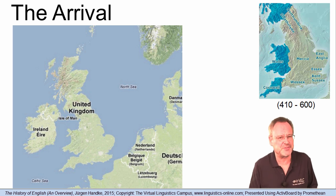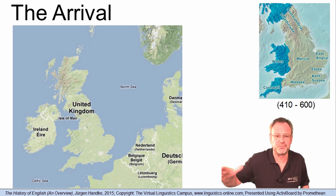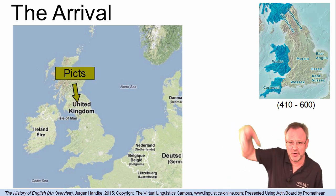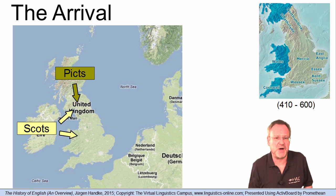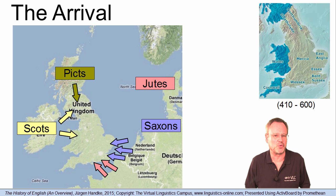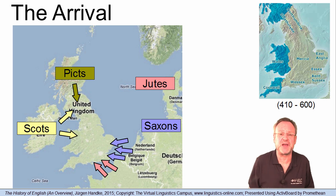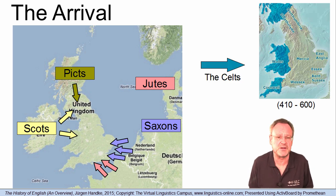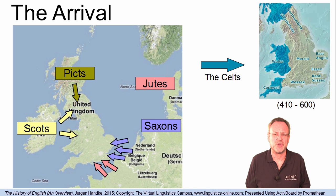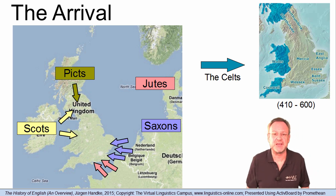In 410 after Christ, the Roman legions were withdrawn from Britain, leaving chaos. The Picts raided from the north, and the Scots from Ireland, while the Jutes and the Saxons attacked the eastern coasts. Throughout the 5th and 6th century, the Britons were slowly driven back into the mountain areas of Cumbria and Wales. Germanic-speaking tribes replaced the Celtic peoples.